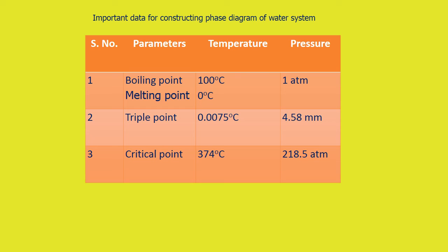Let us see the important parameters required for drawing the water system. Boiling point: 100 degrees Celsius at 1 atmosphere. Melting point: 0 degrees Celsius at 1 atmosphere. Triple point: 0.0075 degrees Celsius at 4.58 millimeters of mercury. Critical point: 374 degrees Celsius at 218.5 ATM pressure.